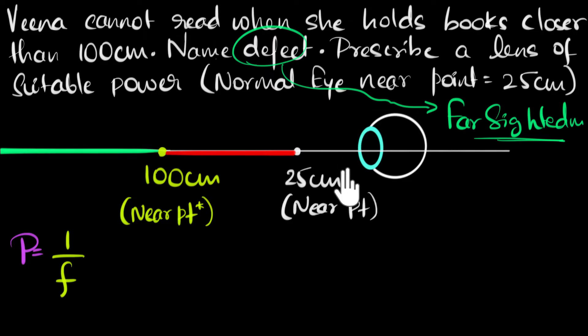So in order to correct her vision, she should be able to see all the way up to 25 centimeters. How do we do that? Another way of saying that is that if there's any object right at 25 centimeters, then its image must be formed at 100 centimeters. Does that make sense? If the object is at 25 centimeters, and if the lens creates its image at 100 centimeters, then she will be able to see that. So this is the object, and this will be the image. So we need a lens which does this.